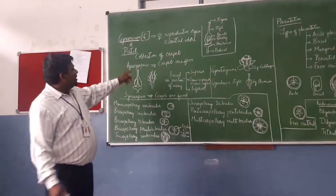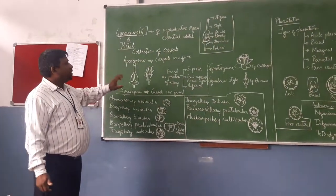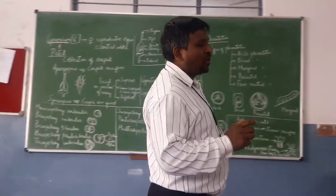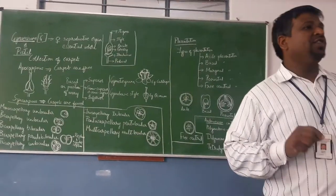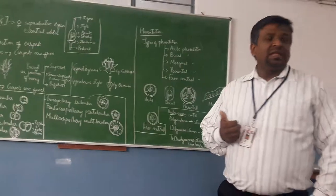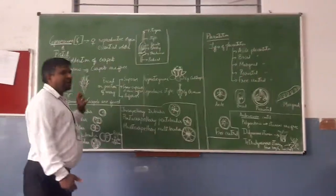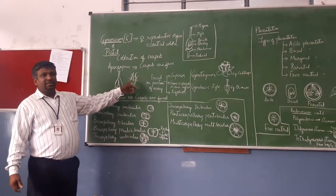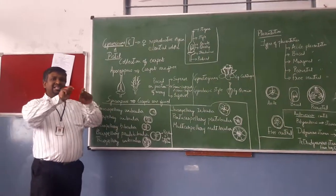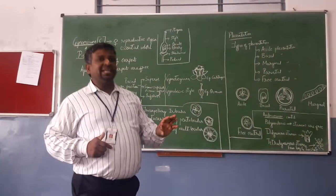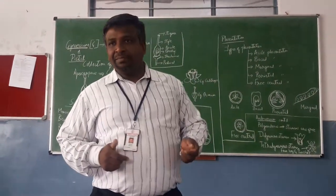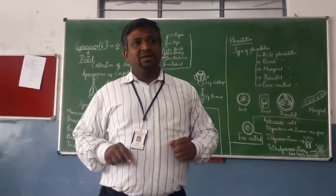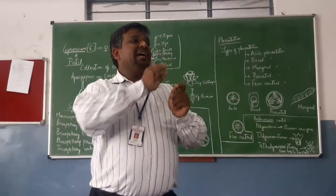You also come across two conditions. Apocarpous — when do we call the carpels apocarpous? When carpels are free. In a few flowers, like the champak flower (scientific name Michelia champaca), you have a spiral arrangement of carpels. They have perianth and they have an apocarpous ovary — carpels are all free and they are spirally arranged. So champak is a very good example for free carpels.